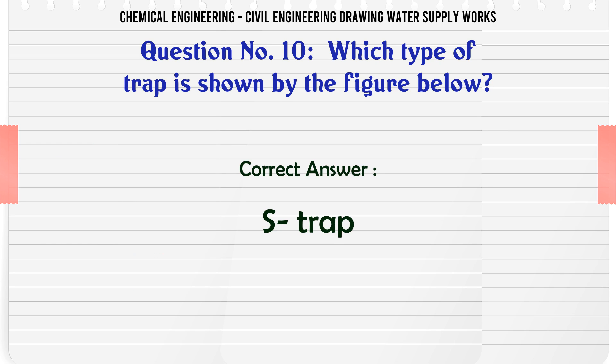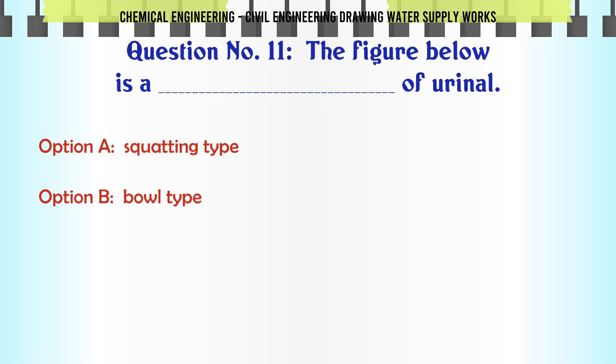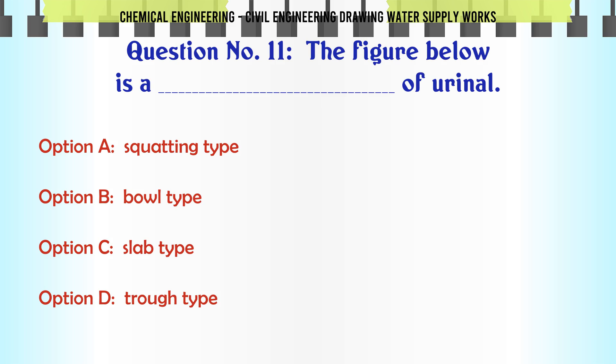The figure below is of which type of urinal? A. Squatting type, B. Ball type, C. Slap type, D. Troph type.